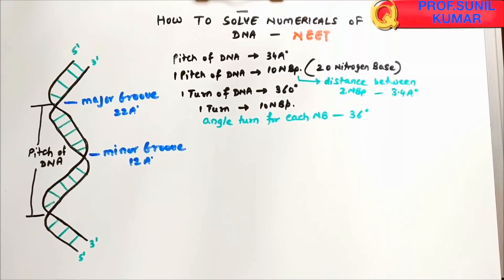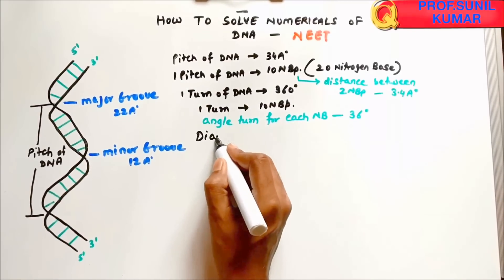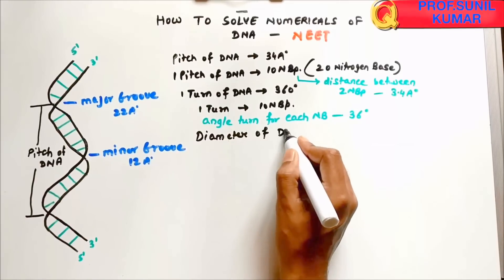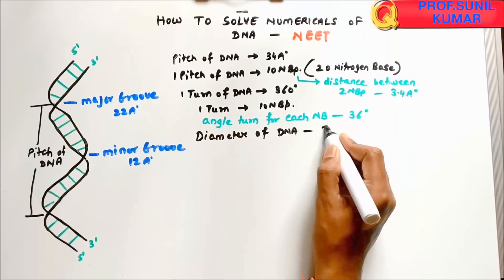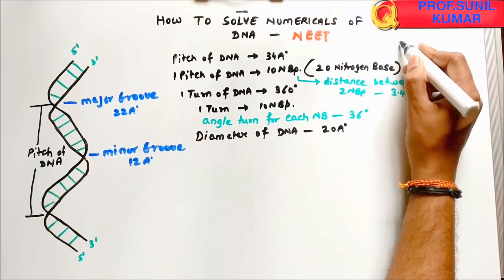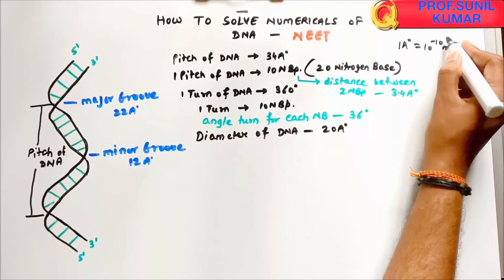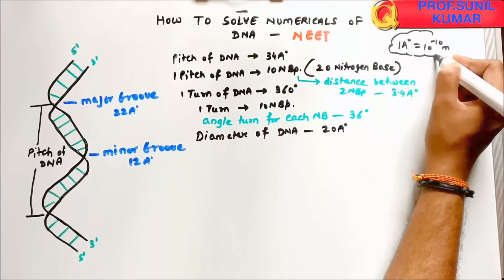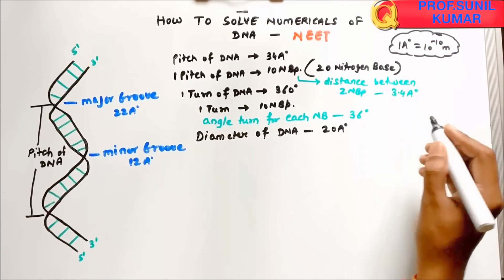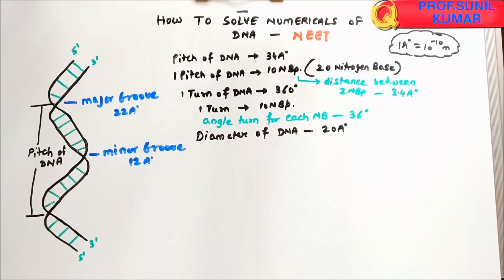The diameter of DNA is 20 Angstroms. One Angstrom is 10 to the power of minus 10 meters. Angstroms can also be converted into nanometers: one nanometer is 10 to the power of minus 9 meters, so one Angstrom is 0.1 nanometers.